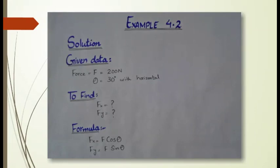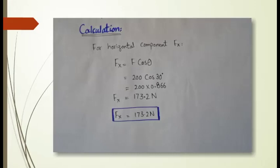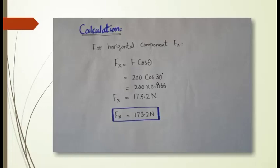We simply use the formulas we have derived. The formulas are: fx = F cos theta and fy = F sin theta. For the horizontal component, fx = F cos theta = 200 × cos 30°. Cos 30° = 0.866, so fx = 200 × 0.866 = 173.2 Newton. This is the horizontal component.